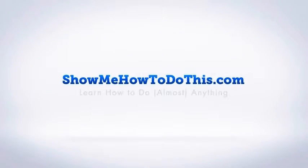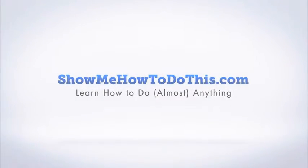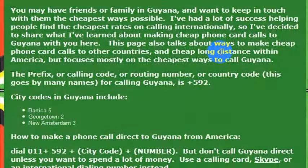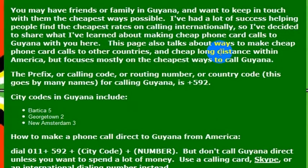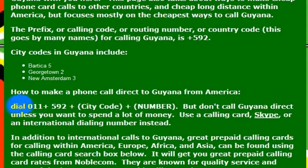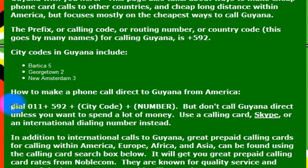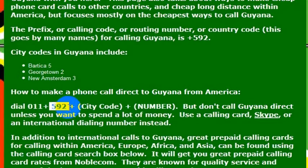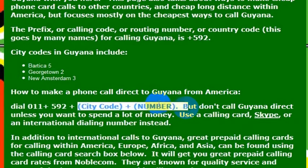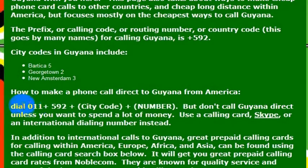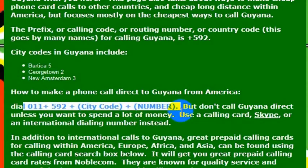To call Guyana, you need to know the country code. You can dial out using any landline or phone enabled to make international calls, but it has to be enabled for international calls in the United States — sometimes cell phones don't work. If you wanted to dial directly, the number is 011, then 592, and then the city code and the phone number.